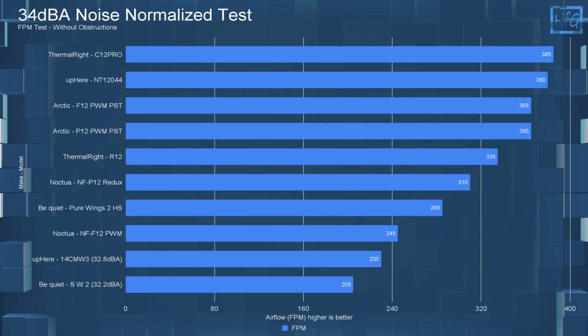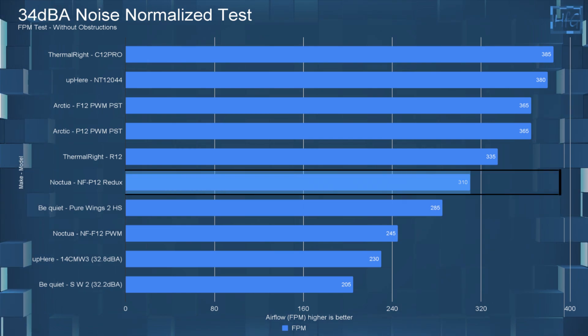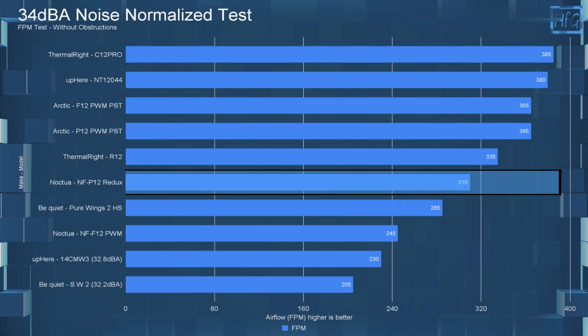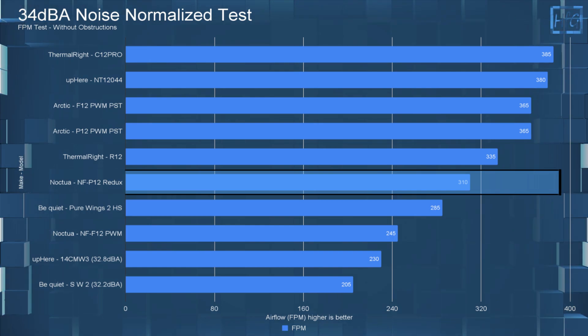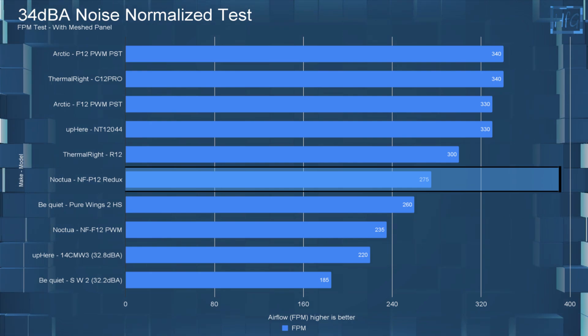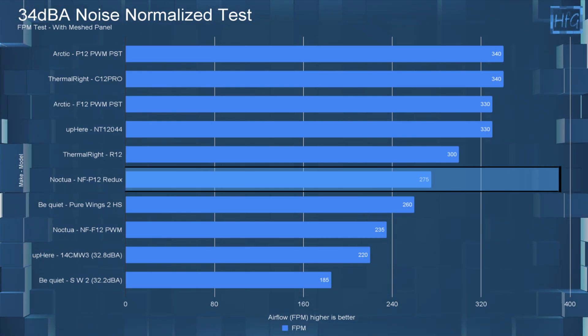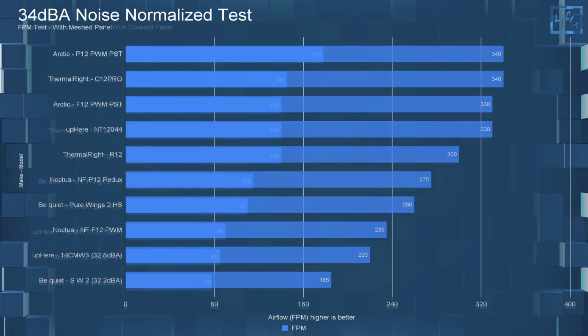Now for the 34 DBA testing. So having all the fans noise equalized to 34 DBA or 12 volts if they don't actually get up to 34 DBA. With no obstructions, the NF-P12 is in the middle of the chart with an FPM of 310. With the mesh panel and noise equalized to 34 DBA, the NF-P12 is again in the middle of the chart with an FPM of 275.